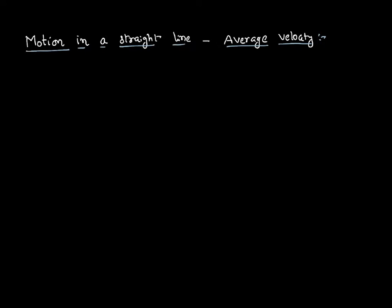Hello everyone. In this post, today we are going to talk about average velocity. Velocity is defined as rate of change of displacement. And if that velocity is not constant, if it is varying with respect to time, then that is called non-uniform velocity.